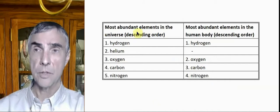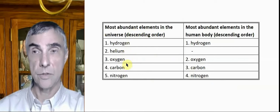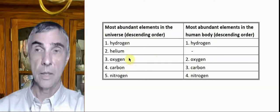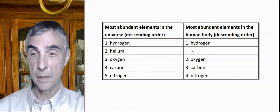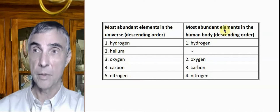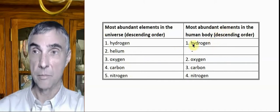However, here are the most abundant elements in the universe in order: hydrogen, helium, then oxygen, then carbon, then nitrogen. Now, helium is a noble gas, and it doesn't combine, or at least not very easily, to make compounds. If we remove helium, the most abundant elements in the human body in descending order match, aside from helium.